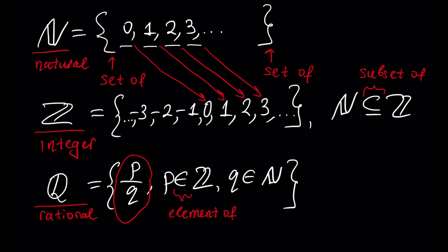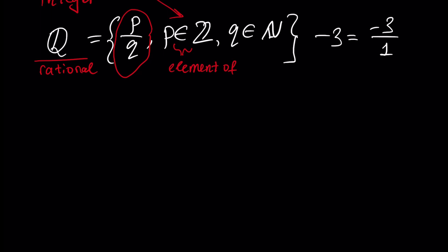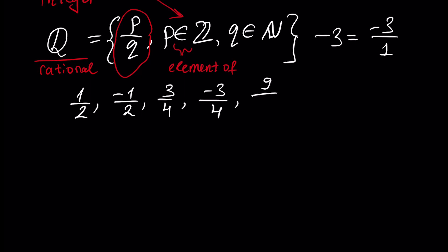From the definition, it's obvious that any element of the set of integer numbers — for example, 3, 2, or minus 1 — is inside the set of rational numbers, because we can write minus 3 as minus 3 over 1. So integer numbers is a subset of rational numbers. Examples of rational numbers are: 1/2, minus 1/2, 3/4, minus 3/4, 9/44, and so on.